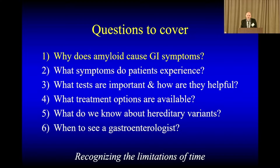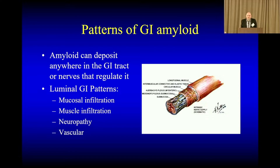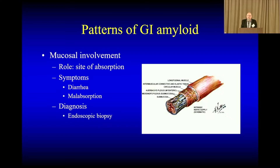With amyloid, it can deposit anywhere in the GI tract or in the nerves that control it. We see a couple of different patterns of involvement based on different subtypes. The amyloid can go in the inner lining or mucosa, it can deposit within the muscle layers, it can lie on the nerves which control the gastrointestinal tract, or it can also affect blood vessels going towards that area. Based on where the amyloid deposits, that often helps determine what the symptoms are. With mucosal involvement — the inner layer — that affects absorption, and diarrhea and weight loss are often the factors we see.